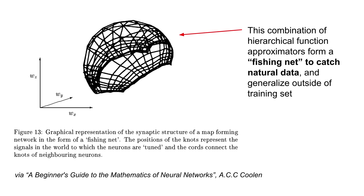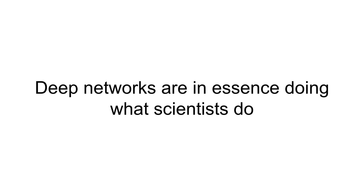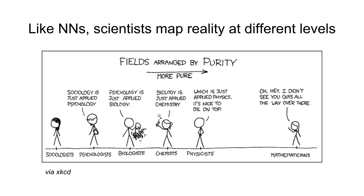In a similar manner, pixels of a cat image are constrained by the fact that they are a cat photo and they cannot vary independently. So a neural network as a whole is tracing a very complex surface in a higher-dimensional space, but that is a very very small region compared to what's mathematically possible — a cat image is a very small portion of 2 raised to power million possible different black-and-white pixelated images. So deep neural networks are in essence doing what scientists do.